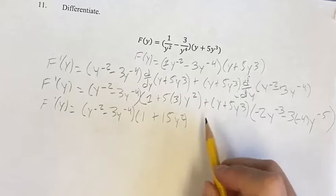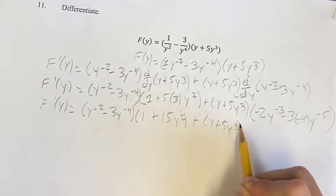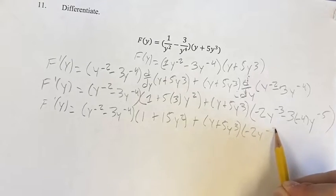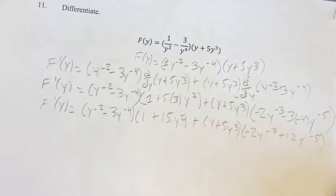Plus y plus 5y cubed times negative 2y to the negative 3 minus 3 times negative 4 is plus 12y to the negative 5.